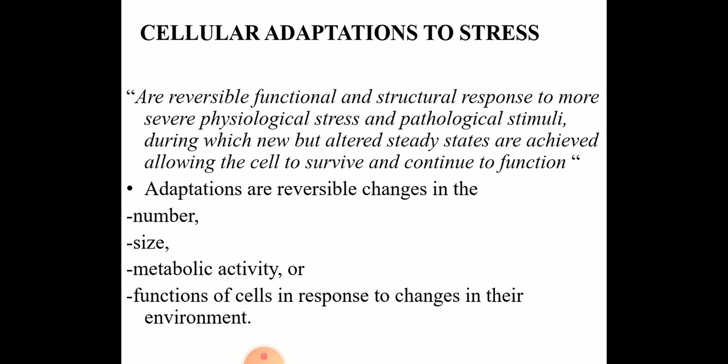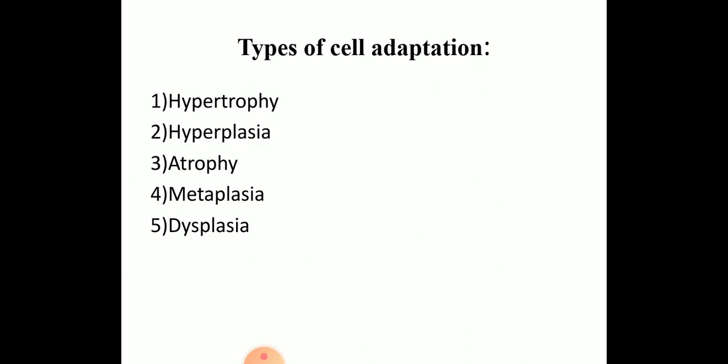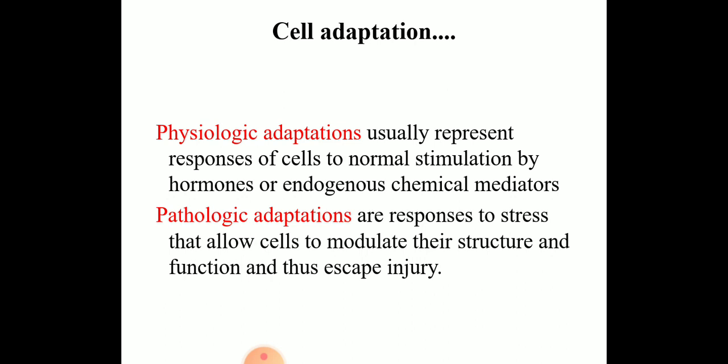These reversible changes occur either in the number of cells, size of the cells, metabolic activity or function of the cells. Depending on this, there are five types of cellular adaptations that include hypertrophy, hyperplasia, atrophy, metaplasia and dysplasia. These adaptive changes may be either physiological or pathological.